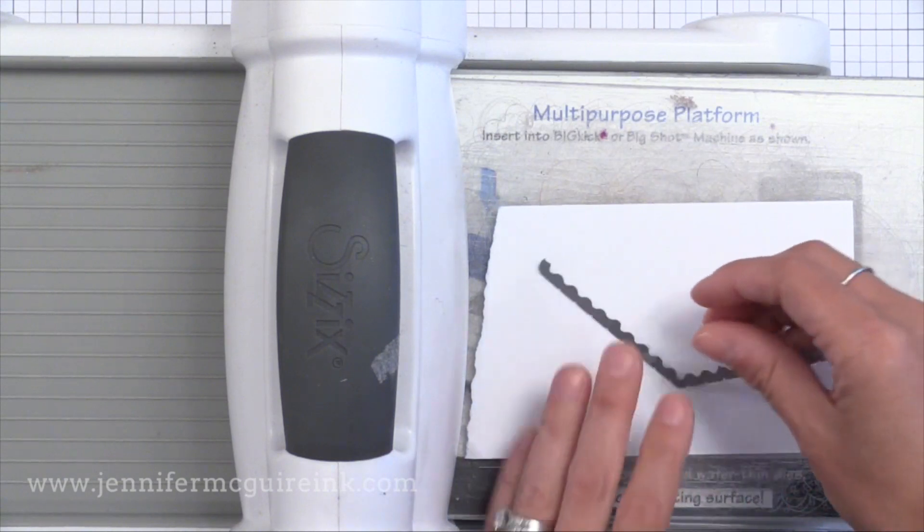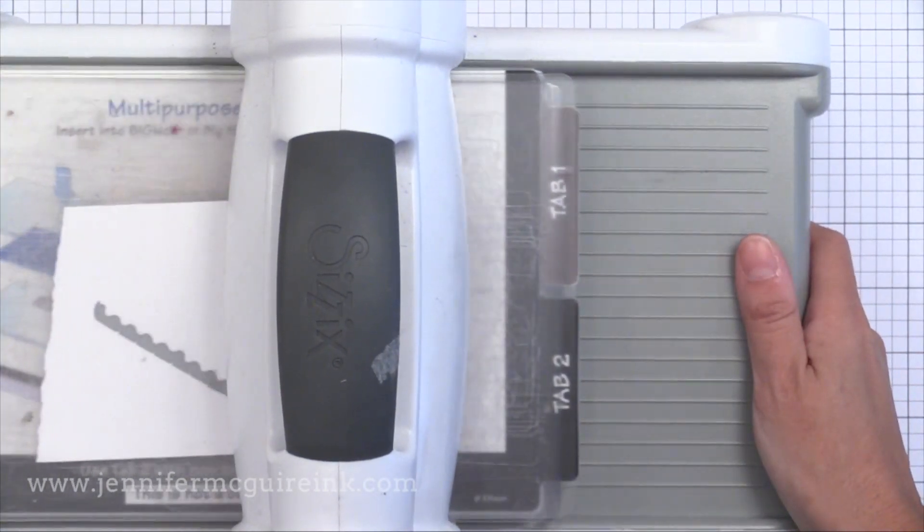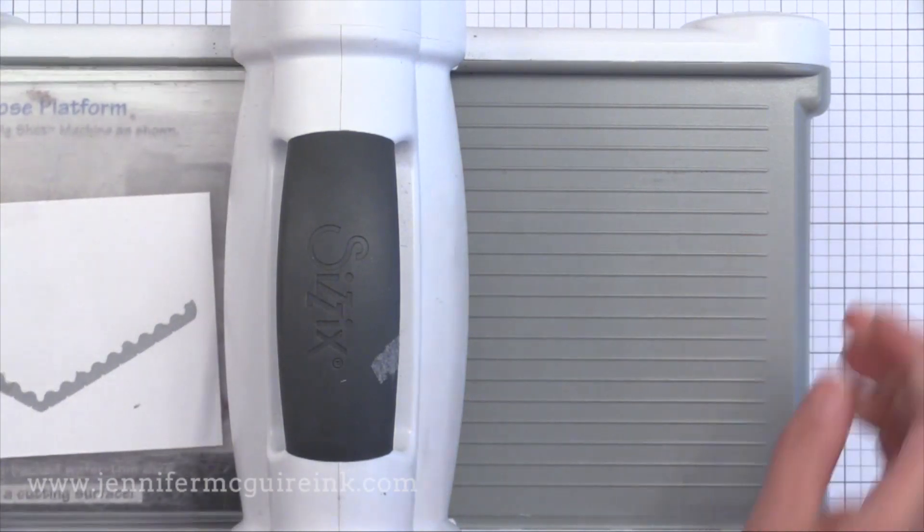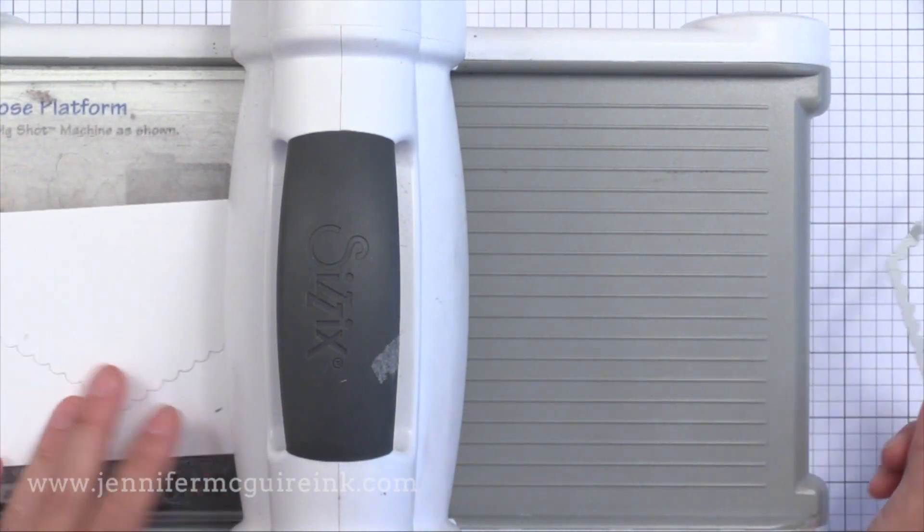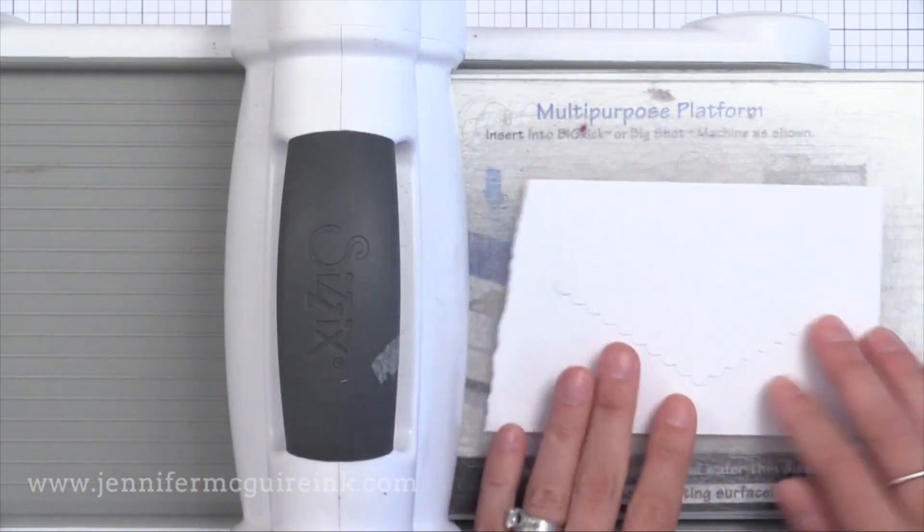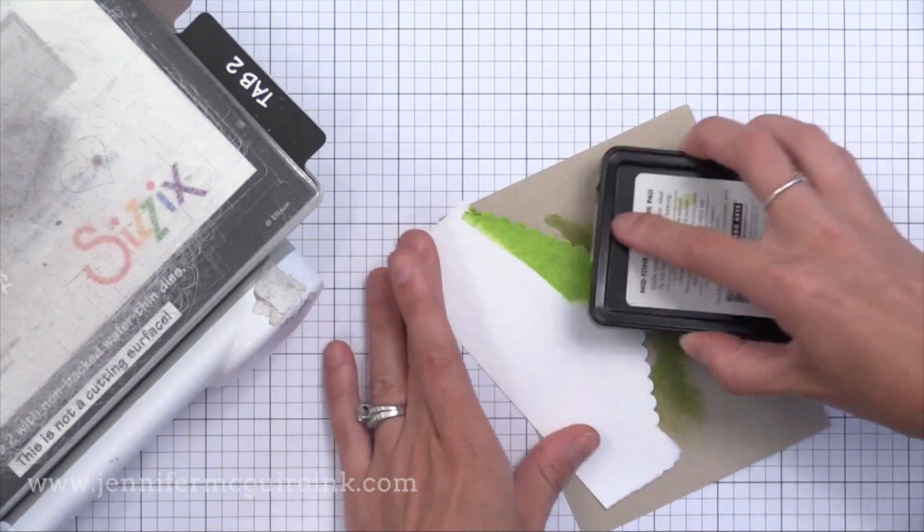I took that same border die. The V with the scallop edge. And I'm cutting it from some white card stock. Now I didn't have the perfect green to match the green stamping I planned to do. So I went ahead and took my green ink pad that I planned to use for the stamping. And I smeared it right onto the card stock. So that I knew it would be a perfect match to the stamping that I'm going to do in a few minutes.